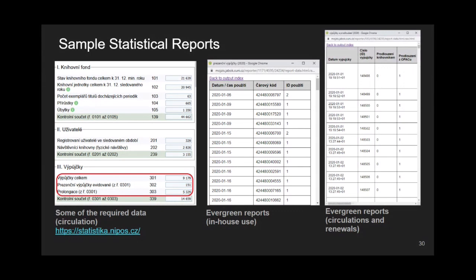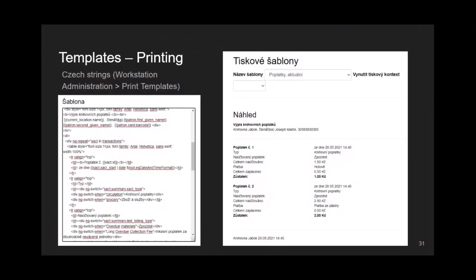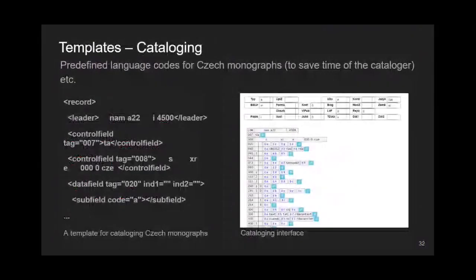Local customization is also necessary in templates for printing, and the screenshots show templates localized into Czech. When we speak about templates, these are not used just for printing, but also for cataloging. In this case, we can mention predefined language codes for Czech monographs, because more correct predefined values save time for the cataloger.